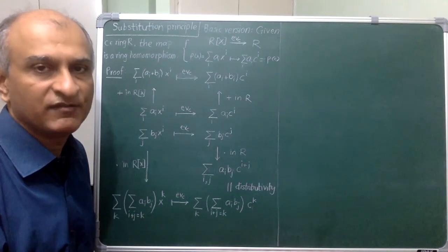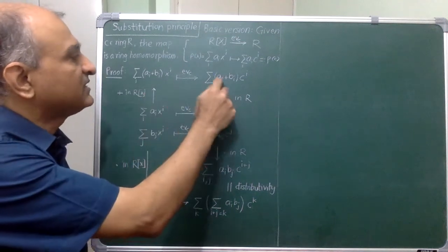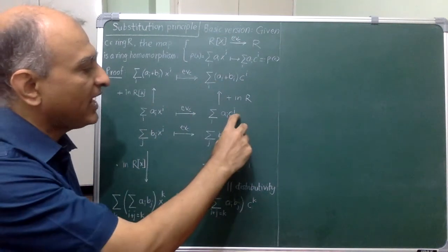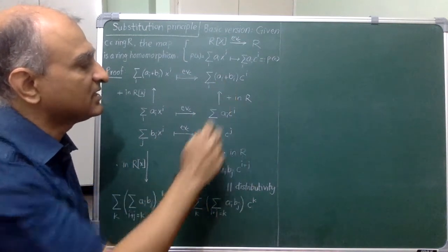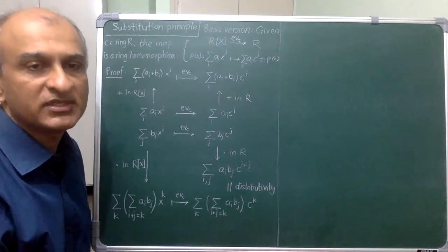Adding polynomials first and evaluating gives me this result. If I add both of these, I will get the same result by rearranging the terms and using distributivity.